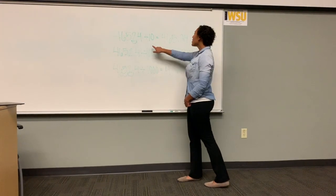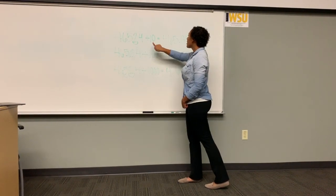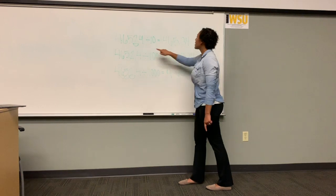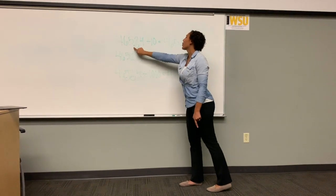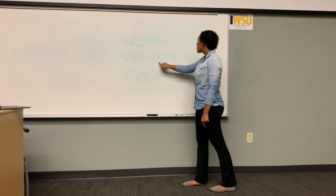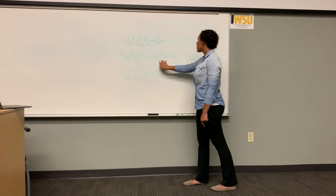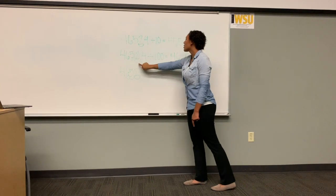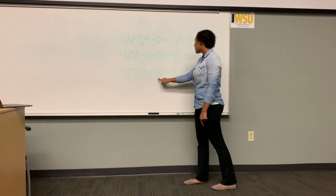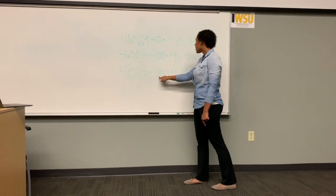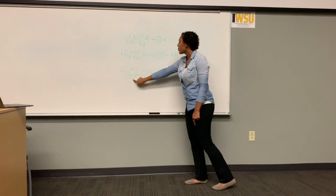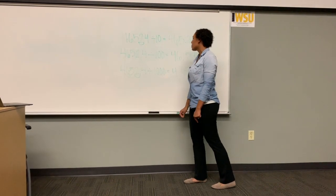Notice how whenever we divide by 10 there is one zero, so we move the decimal point over one time. When we divide by 100 there are two zeros, so we move the decimal point over two times. And in the thousands there are three zeros, so we move the decimal point over three times.